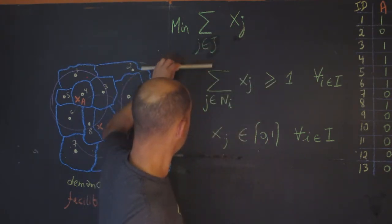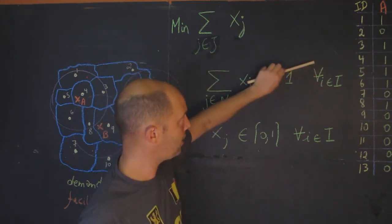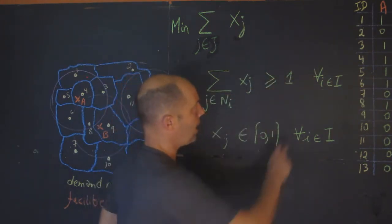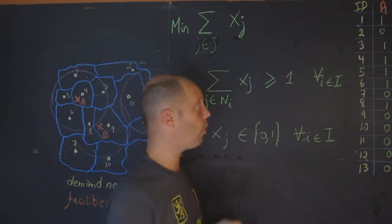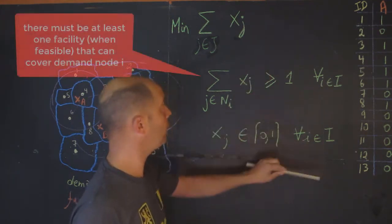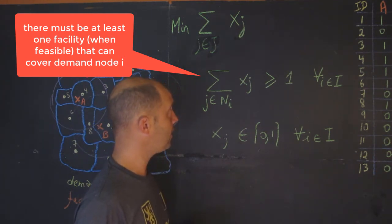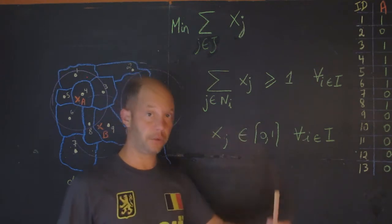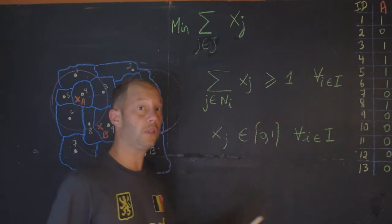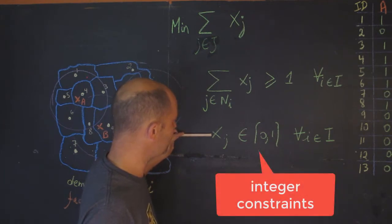Now this is the constraint. The constraint says that for each demand node—for all i's that belong to the set I—for all the demand nodes, and there are 13 of them, I'm going to have a constraint that there must be at least one facility that is going to cover it. There are cases where we are not going to find a facility, like the case for nodes 13, 10, 7, and 2.